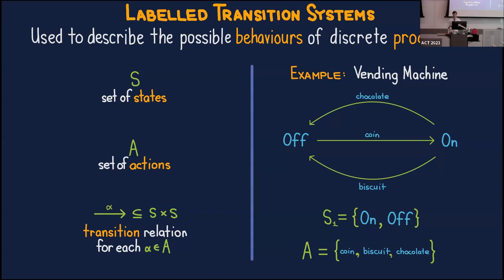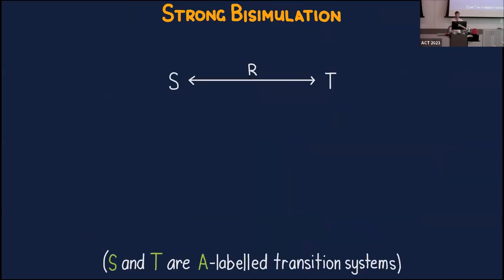Labeled transition systems describe behaviors of processes, and given this interpretation it's possible to define different labeled transition systems which, to an external observer, have the same behavior. This is where the notion of bisimulation comes about — it's about trying to capture some kind of equivalence of labeled transition systems in terms of when an observer can distinguish between two different processes.